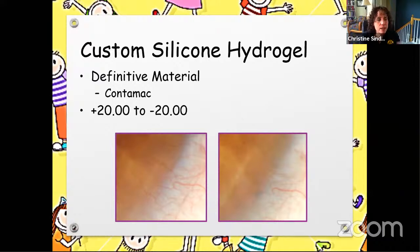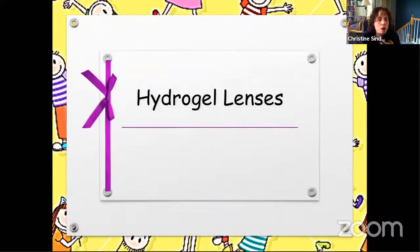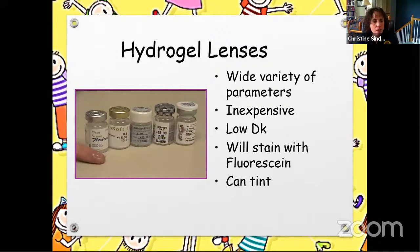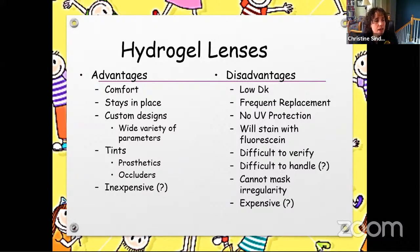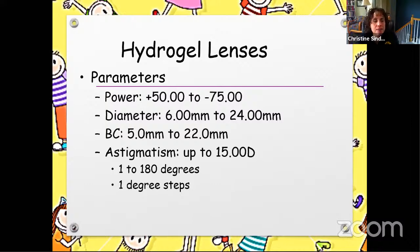Custom-made silicone hydrogel lenses — we have them in the Definitive Contamac material — are pretty good, though I find the reproducibility a little bit difficult. They are certainly better as far as neovascularization into the cornea. Hydrogel lenses offer a wide variety and are very inexpensive. You can tint them — I will sometimes do a tinted lens for a child that wants a cosmetic appearance. The advantages are they stay in place and are relatively inexpensive. The disadvantages are low oxygen permeability and they don't mask any irregularity. But you can get them in almost anything you want: plus 50 to minus 75, any base curve, any diameter, any astigmatism.